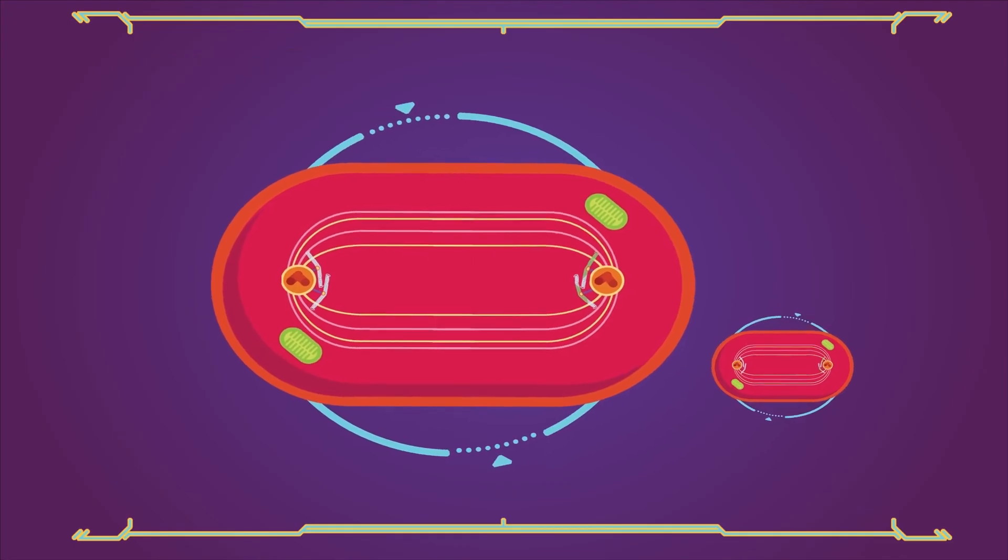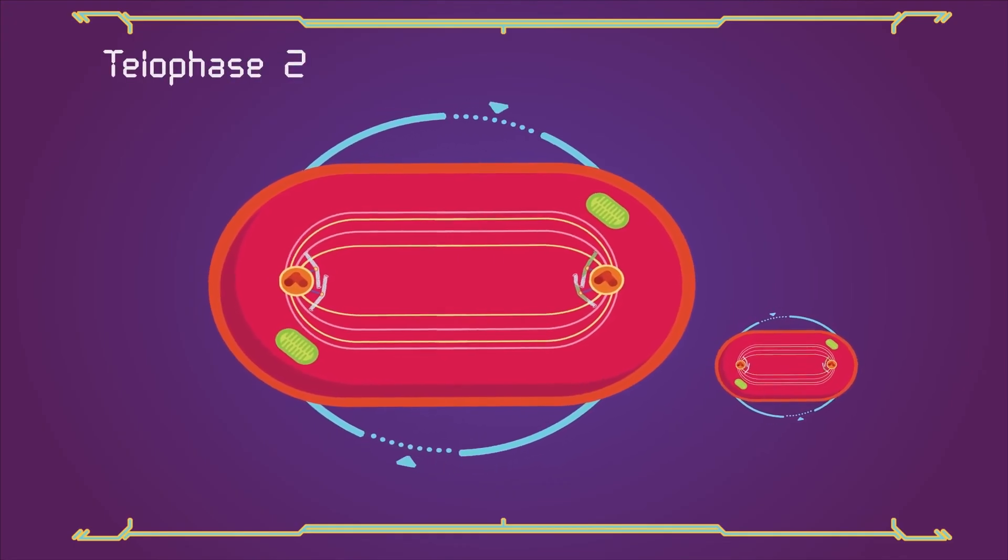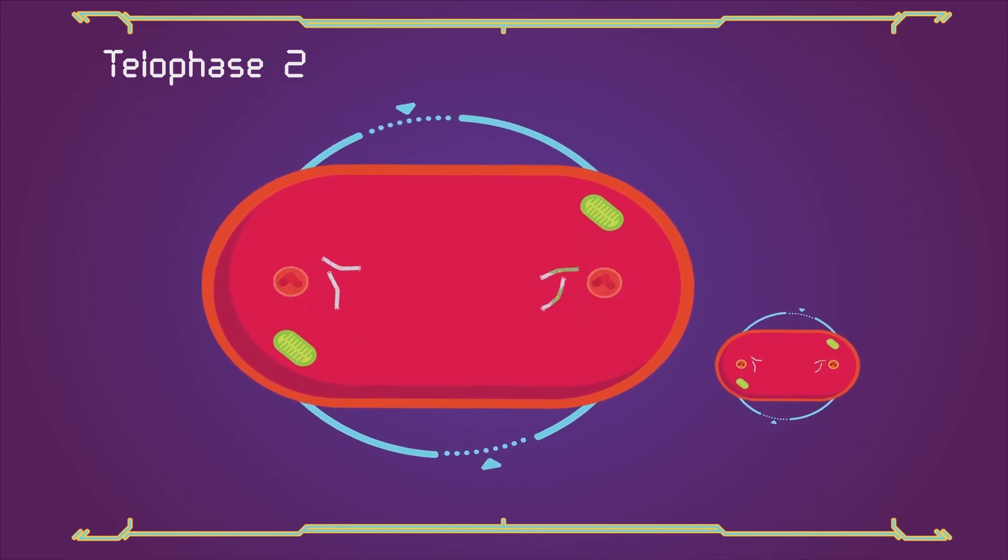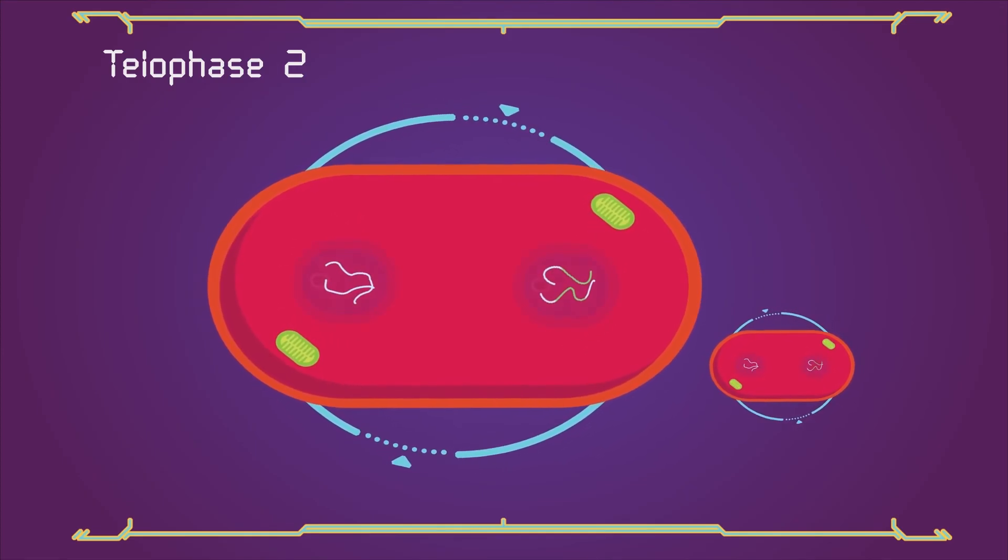The process ends with telophase 2, which is similar to telophase 1, and is marked by the disassembly of the spindle and decondensation and lengthening of the chromosomes.